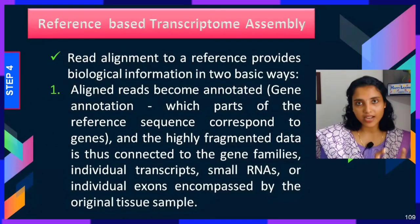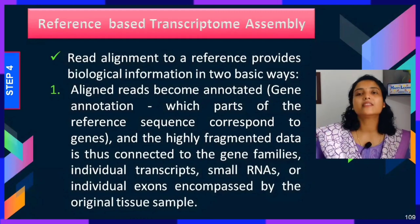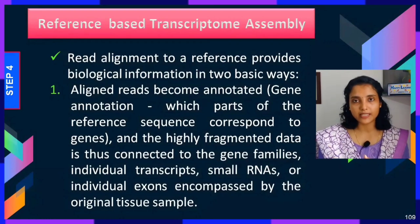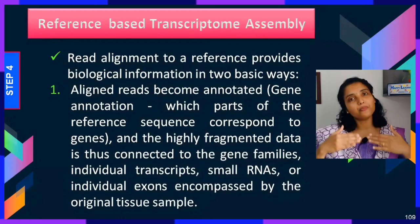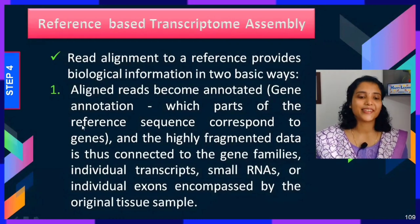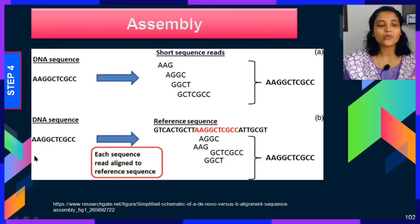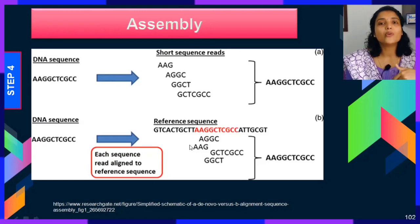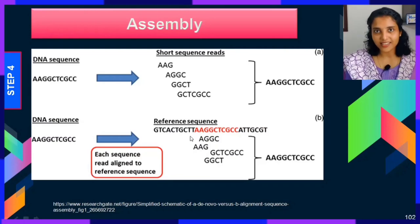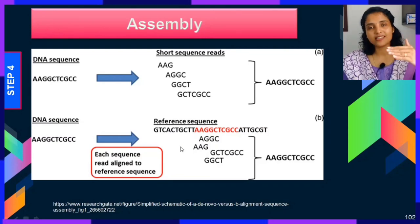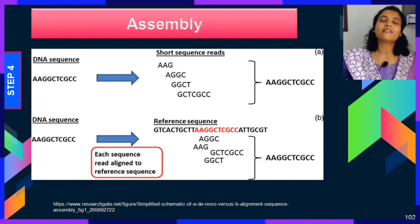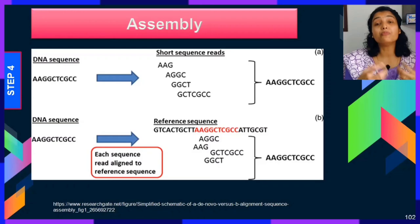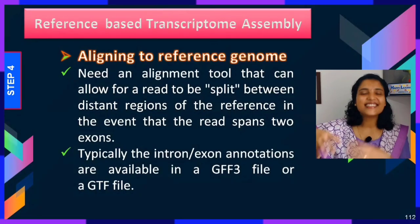That was de novo transcriptome assembly — assembling the complete sequence from scratch. Another approach is reference-based transcriptome assembly, where you already have a reference and assemble your transcriptome based on it. You align or map your reads to a reference sequence, which is much easier since a major map of your DNA segment can be formed with the help of a reference genome.